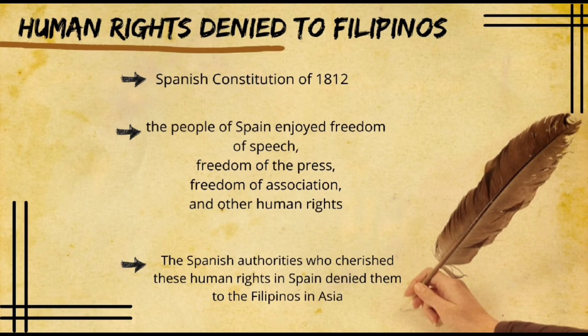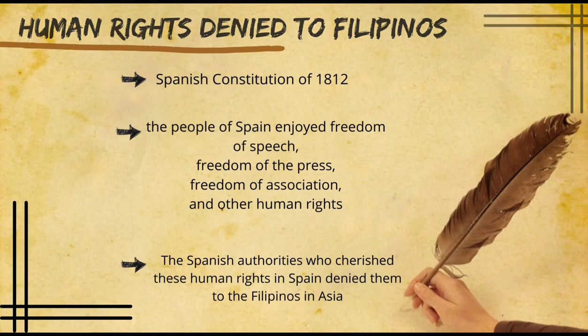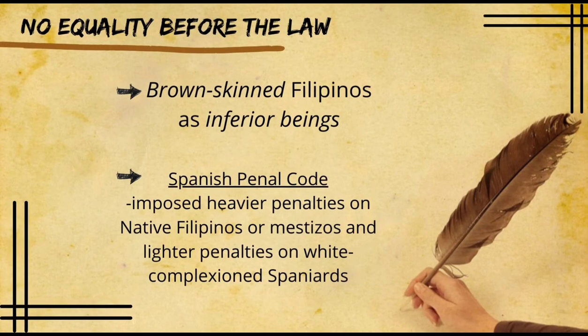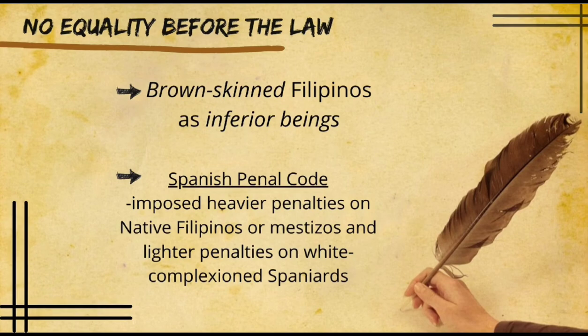Regarding human rights denied to Filipinos: since the adoption of the Spanish Constitution of 1812 and other constitutions in succeeding years, the people of Spain enjoyed freedom of speech, freedom of the press, freedom of association, and other human rights — except freedom of religion. The Spanish authorities who cherished these human rights in Spain denied them to the Filipinos in Asia.